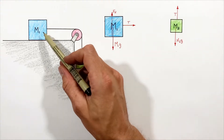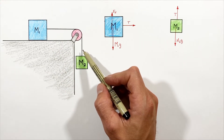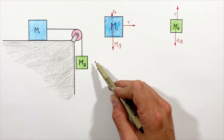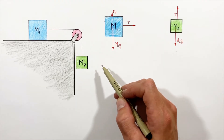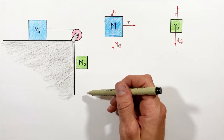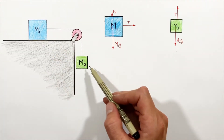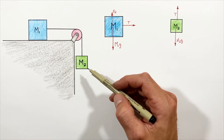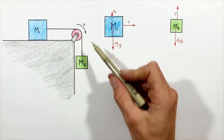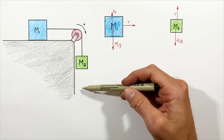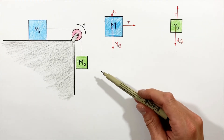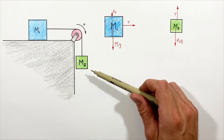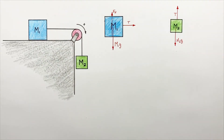Remember, we're trying to solve for the acceleration of the two blocks and the tension in the string. To find the acceleration, we'll use Newton's second law to set up a system of equations. Forces and acceleration are vectors, so we need positive and negative directions. The block on the table accelerates to the right while the hanging block accelerates downward — same magnitude, different directions. So we define a positive direction of motion: to the right for the table block and downward for the hanging block, coordinating the motion of both blocks together.